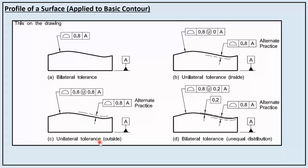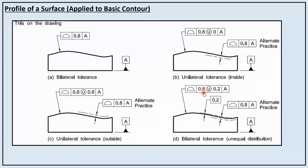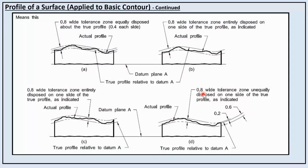For unilateral tolerance outside, the total geometrical tolerance is outside the part and zero is inside. In another example, 0.2 is outside and the remaining portion is inside, making a total geometrical tolerance of 0.8.